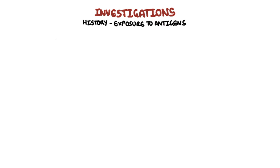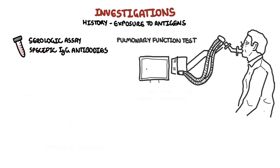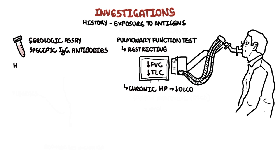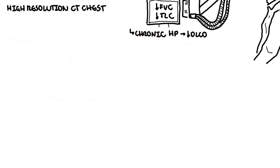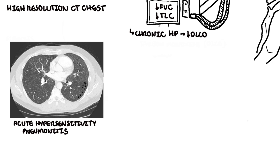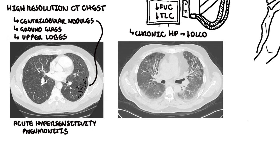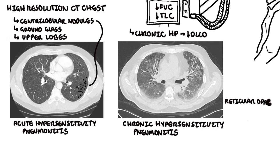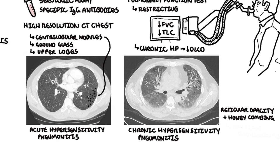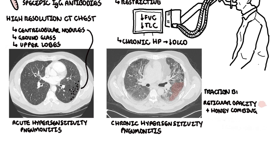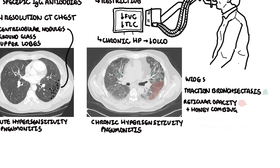For investigations, a thorough history is vital, particularly regarding exposure to specific antigens. Serological assays for specific IgG antibodies should be performed. A pulmonary function test will show a restrictive lung pattern with a reduced FVC and total lung capacity, and in chronic hypersensitivity pneumonitis, there will be a reduced DLCO. A high-resolution CT chest will demonstrate a diffuse, usually nodular micronodule pattern with ground glass changes predominantly affecting the upper lobes. In chronic disease, reticulation, honeycombing, significant traction bronchiectasis, and widespread ground glass changes may be seen, indicating fibrosis.